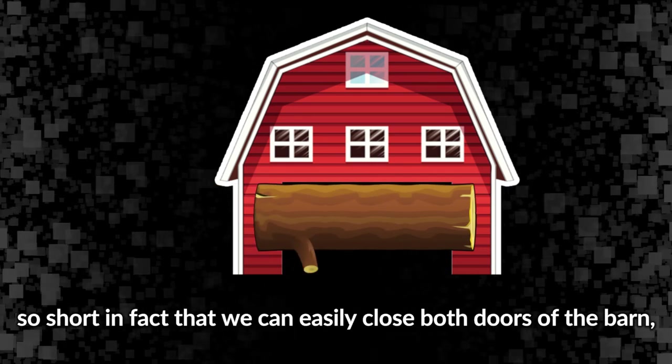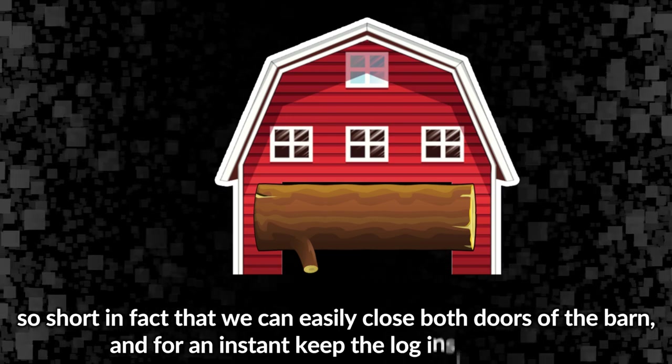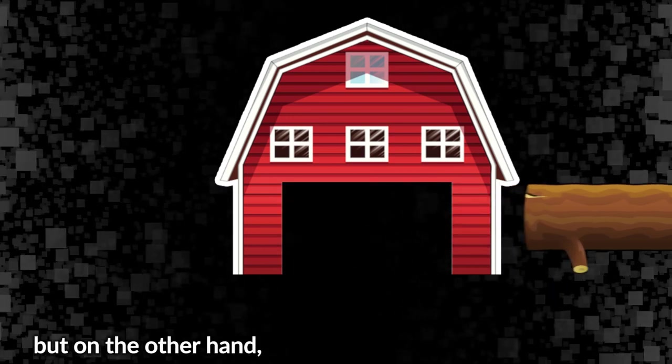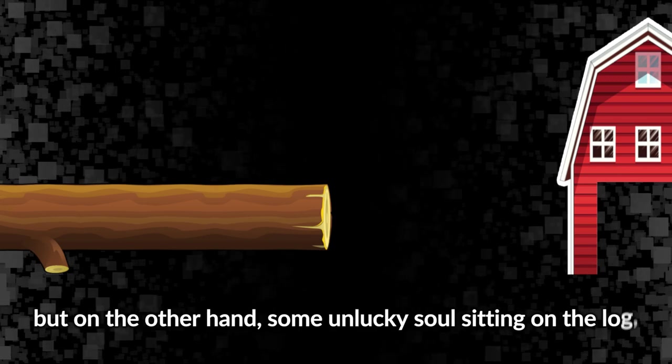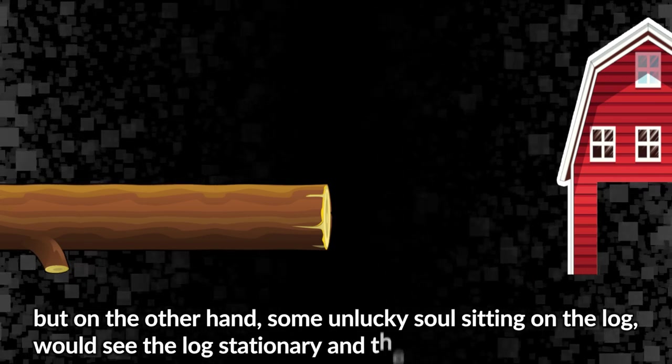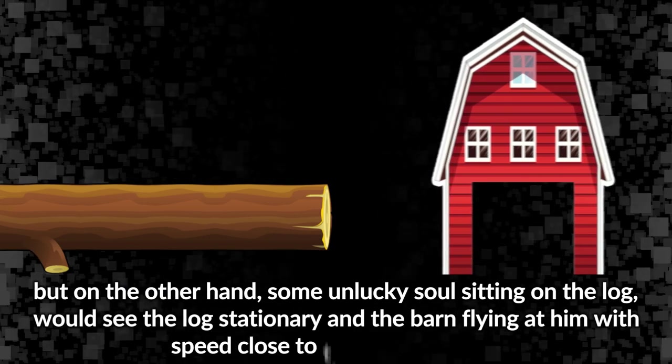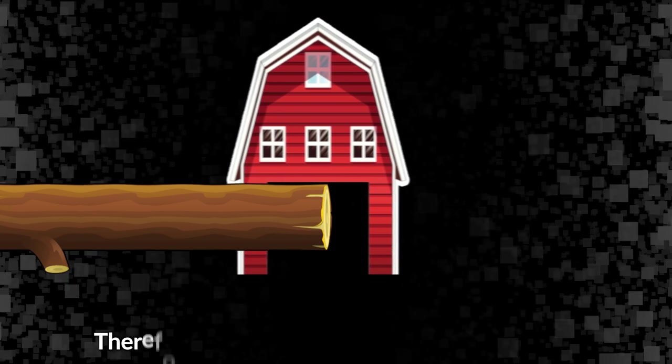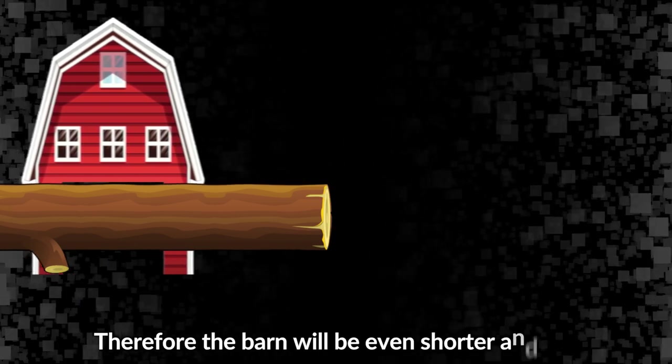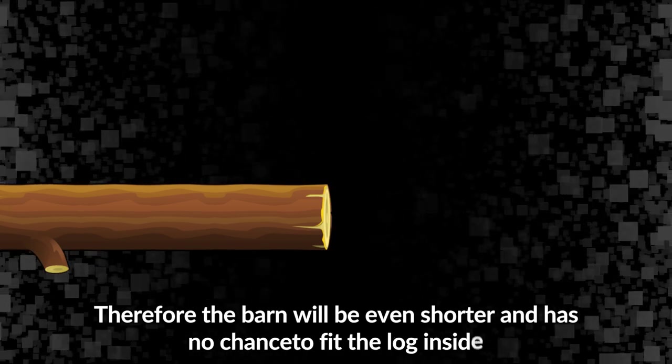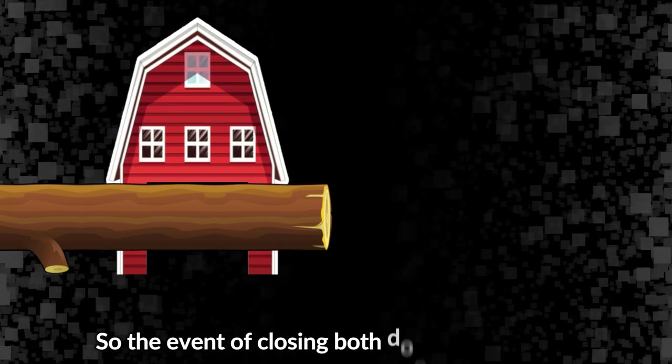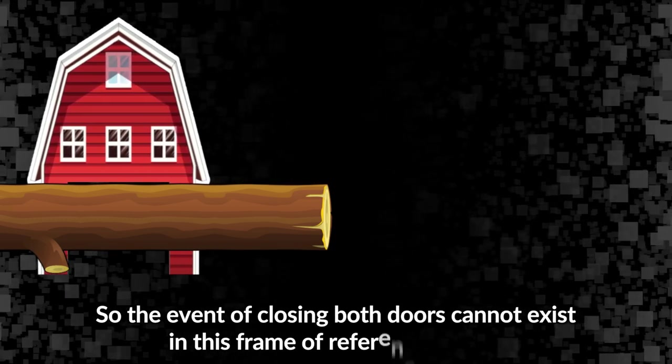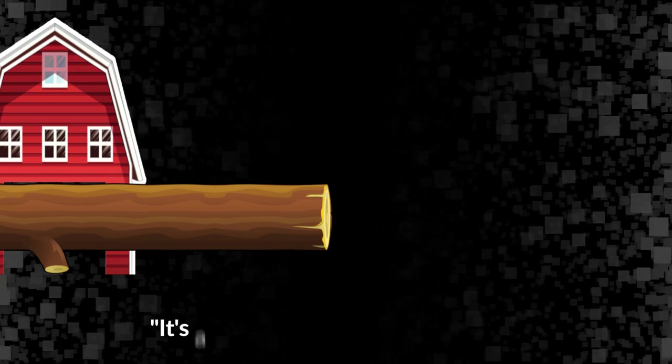On one hand, at high speed from static barn's point of view, the log is warped and short - so short in fact that we can easily close both doors of the barn and for an instant keep the log inside, right? But on the other hand, some unlucky soul sitting on the log would see the log stationary and the barn flying at him with speed close to the speed of light, therefore the barn will be even shorter and has no chance to fit the log inside. So the event of closing both doors cannot exist in this frame of reference, right? It's a contradiction!